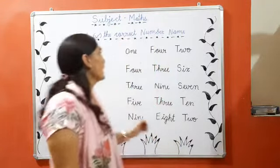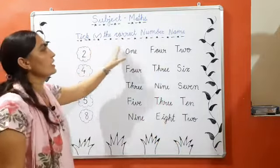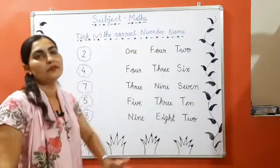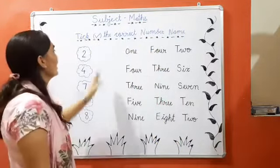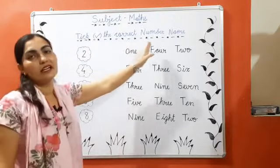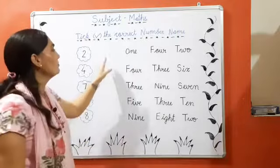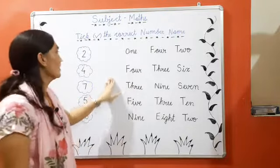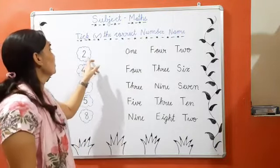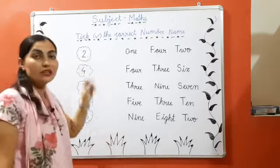Name of our activity is tick the correct number name. In this activity, what you have to do? Firstly, you will see the number carefully.